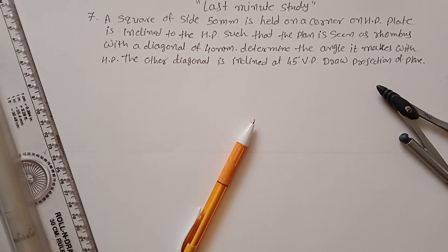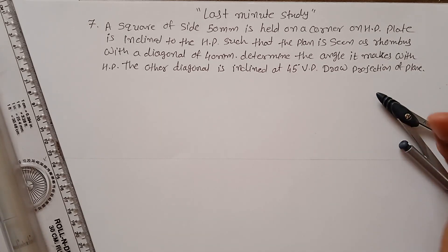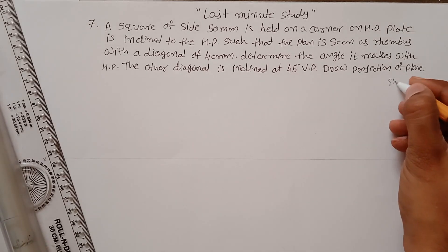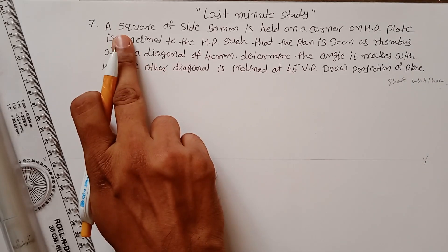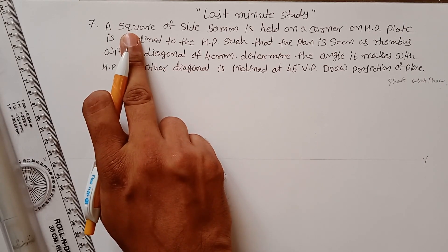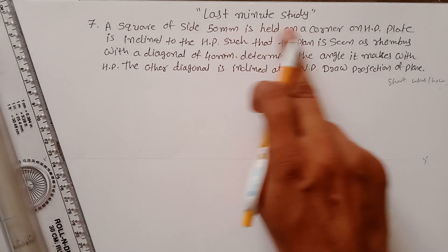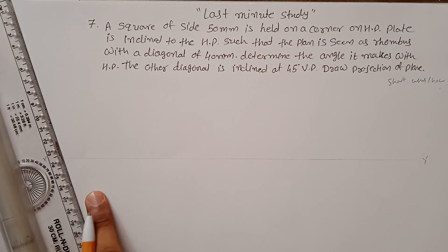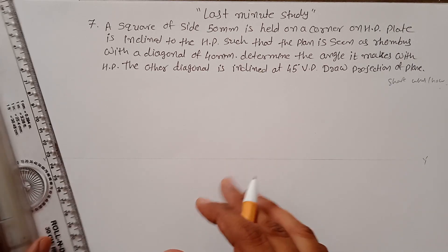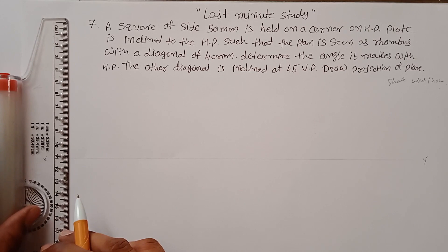Problem number seven from projection of planes. First step is to find out the shape of the plane, where it is resting and how it is resting. You can see a square — the plane shape is held on the corner on HP. So the plane is resting on HP with its corner. You have to draw a square as a top view because it is resting on HP with its corner, so first draw the corner here.